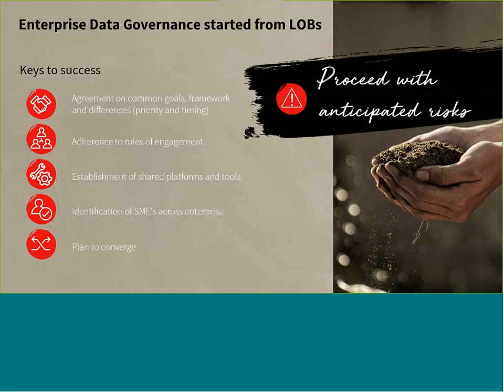I'll answer that with an example. Let's say we all have the magic number for the number of data domains in our enterprise data governance program. When I define my scope as a line of business, my magic number is probably still the same number. If we say 14 to 20 is the perfect range for the number of domains in your enterprise data governance program, that range applies at the line of business level too.